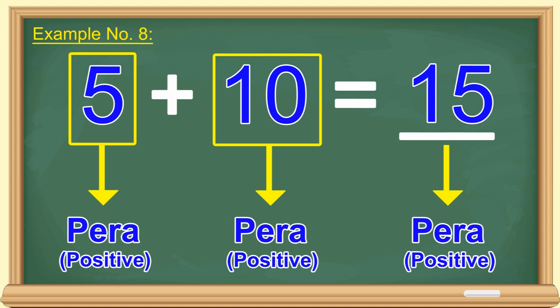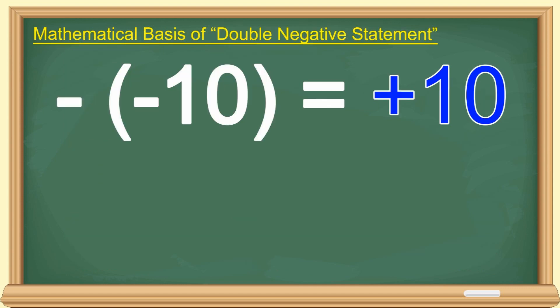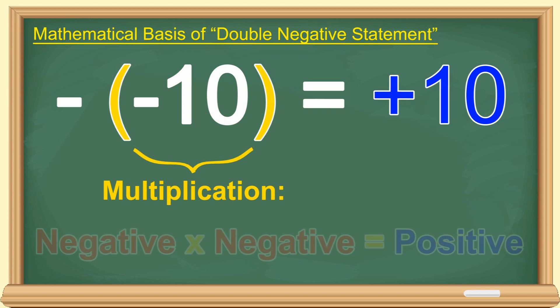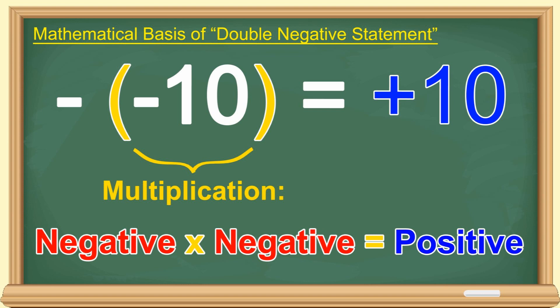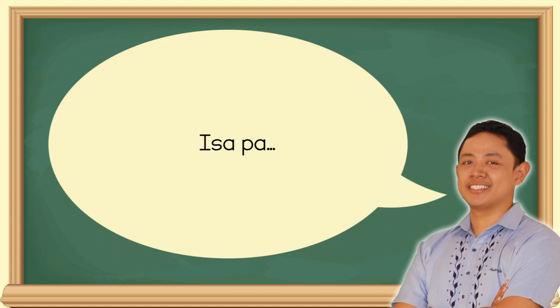Teka, teka, teka. Baka akala nyo, walang basihan ang tinuro kong double negative sa math. Meron. Pag nakaparenthesis, ano ang operation? Multiplication. So, i-multiply ang parehong negative. Negative times negative is always positive. Ganyan yun. Isa pa.